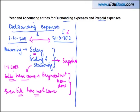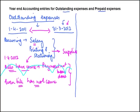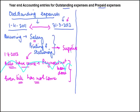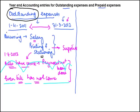If the bills have come, we will straightaway debit the printing and stationery account and credit the supplier. But if we have to provide or book an entry for expenses for which we have actually incurred a liability to pay them, these are known as outstanding expenses.